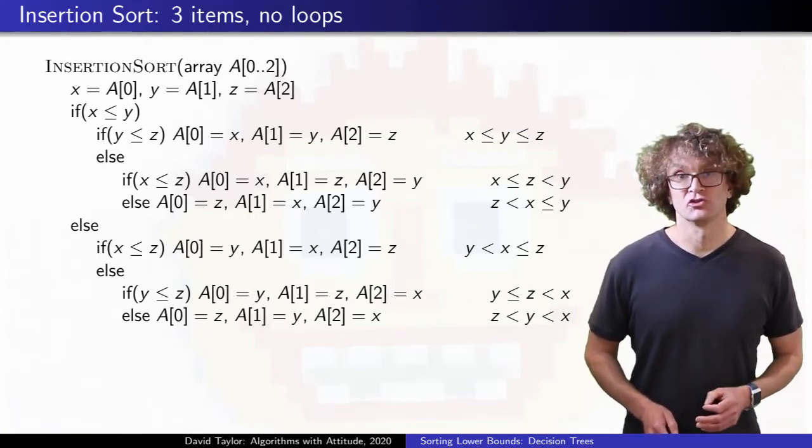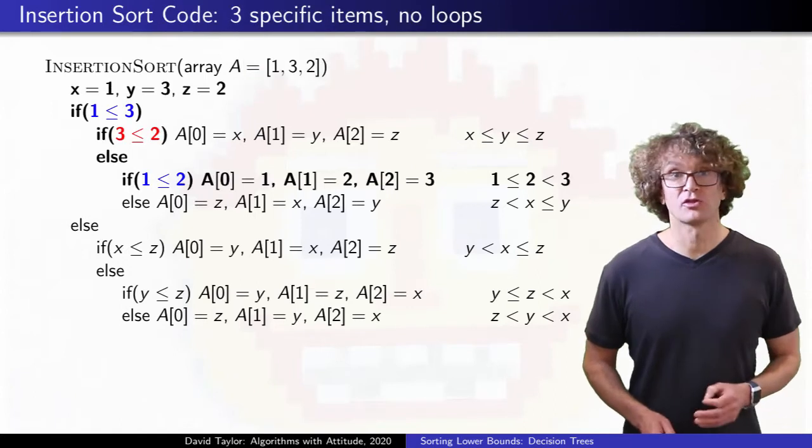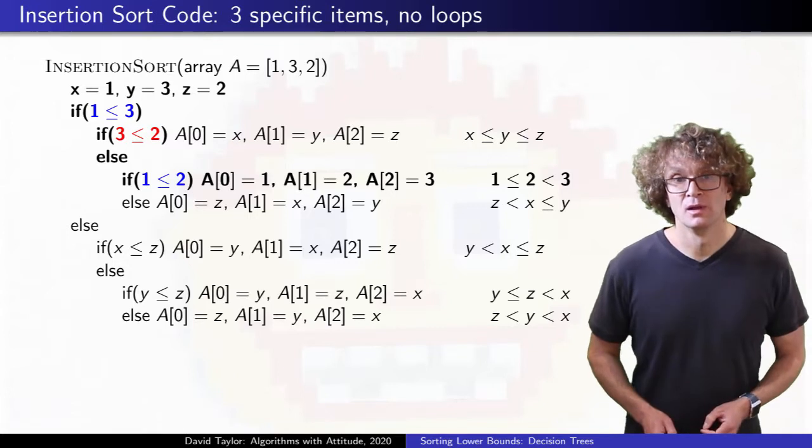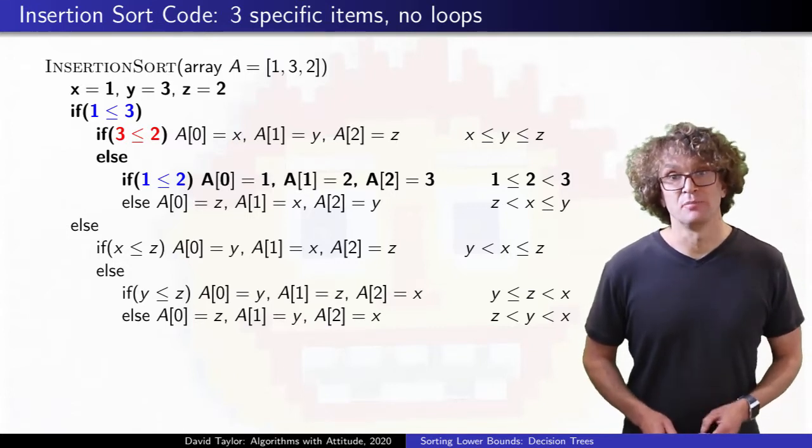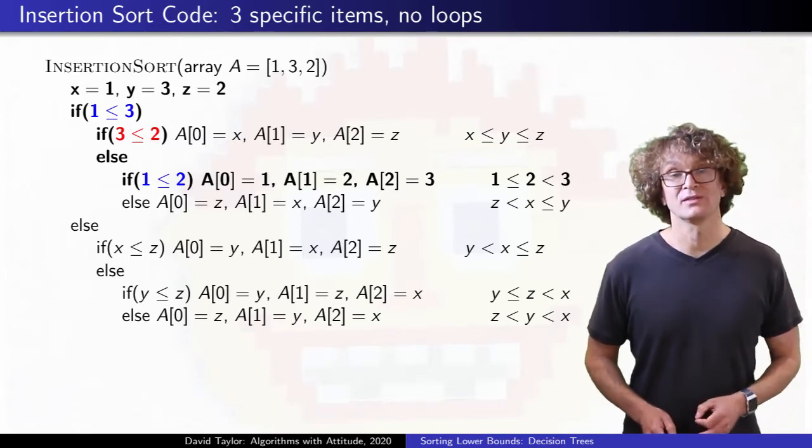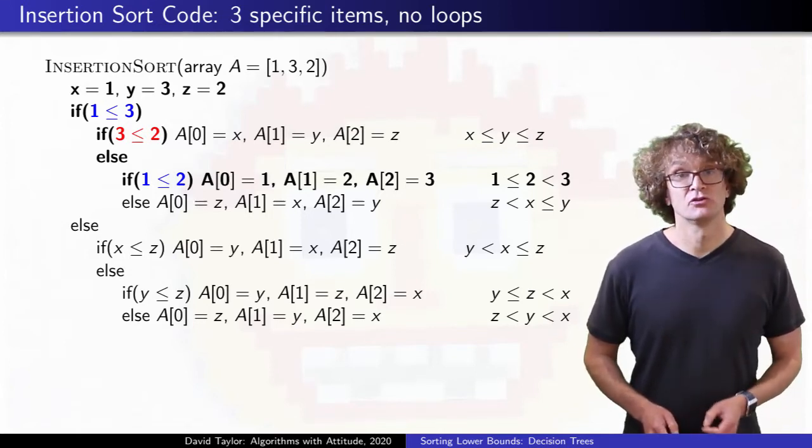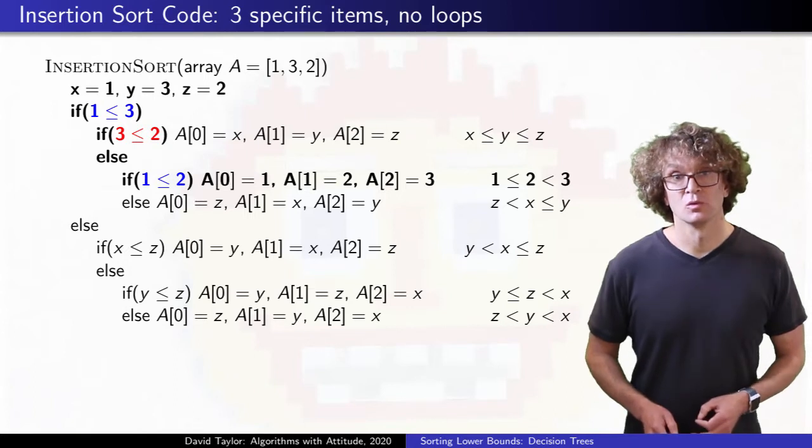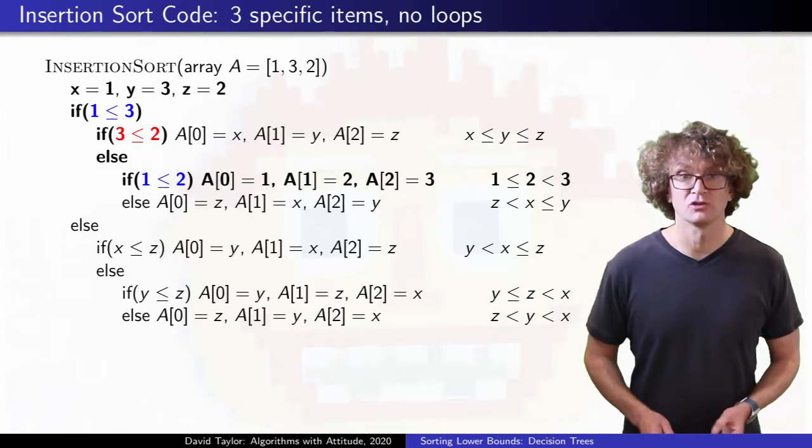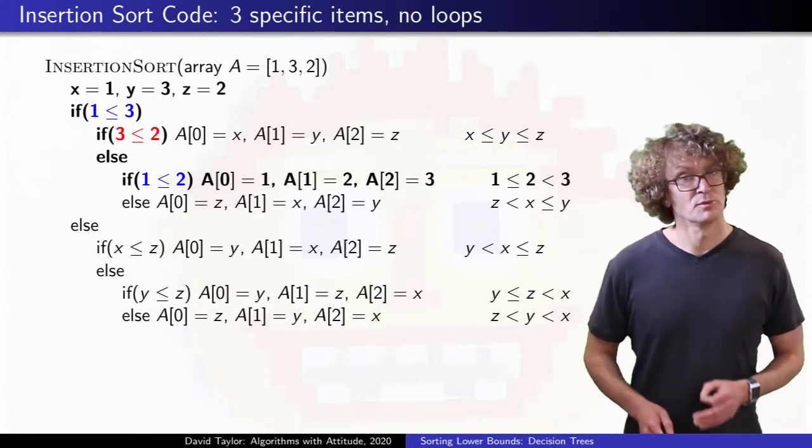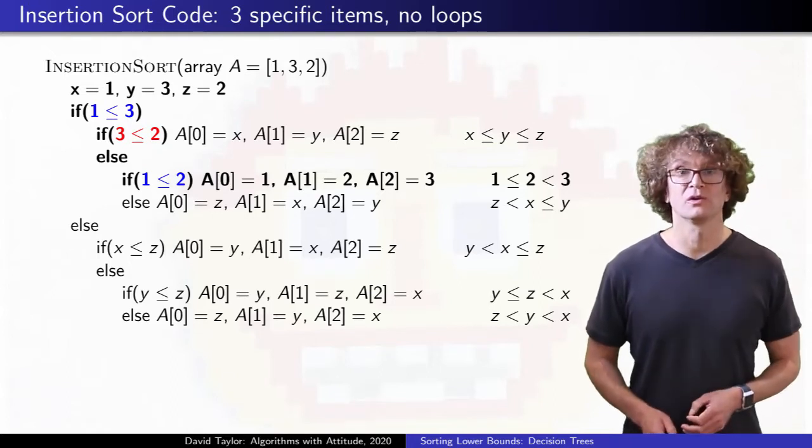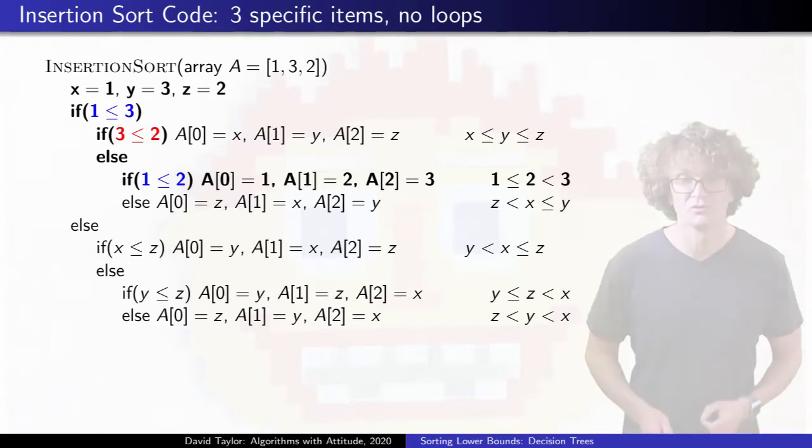If we consider running insertion sort on the numbers 132, we can see the three comparisons the code will perform. Like any comparative based sort, it's the relative sizes of the inputs that are important, not the absolute values. So insertion sort will go through the same steps to sort 11, 13, 12, as it does for 132. The problem here is that this is just a horrific way to see what's happening, so let's introduce decision trees.